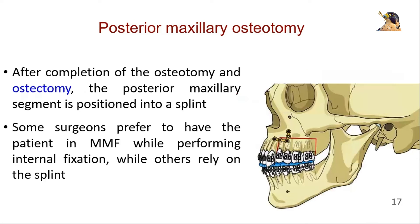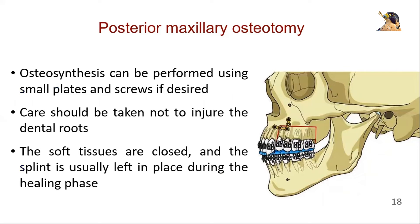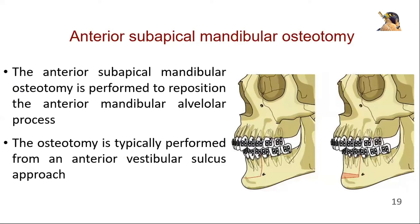After completion of the osteotomy and ostectomy, the posterior maxillary segment is positioned into a splint. Some surgeons prefer to have the patient in MMF while performing internal fixation, while others rely on the splint. Osteosynthesis can be performed using small plates and screws if desired. Care should be taken not to injure the dental roots. The soft tissues are closed and the splint is usually left in place during the healing phase.